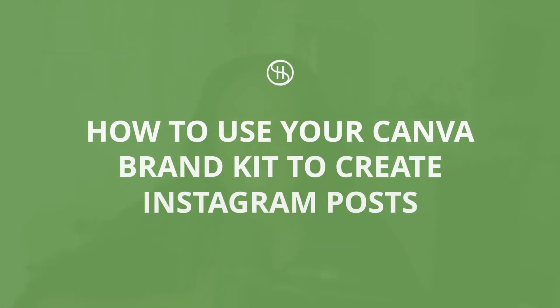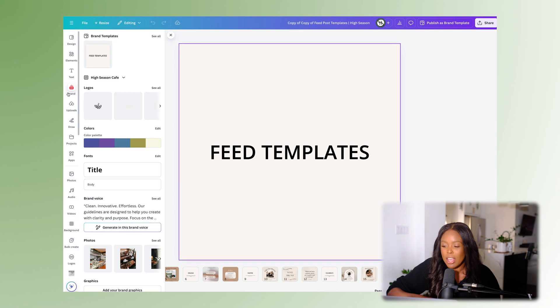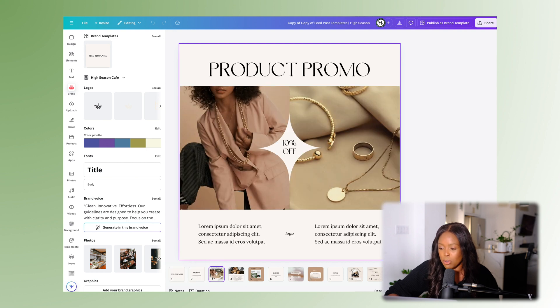Now that we've created our brand kit, let's talk about how you can leverage it to create consistent content across your social platforms like Instagram. Select your brand kit and you'll see everything listed there — let's make a carousel post, for example.